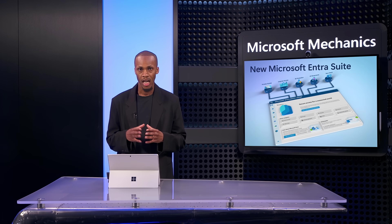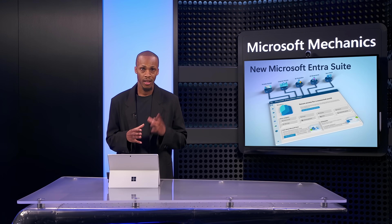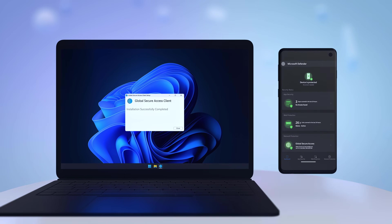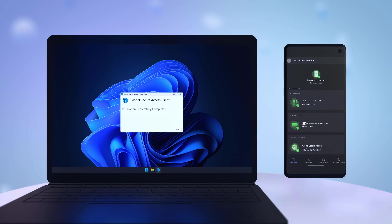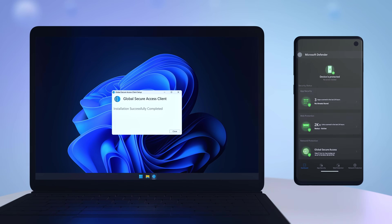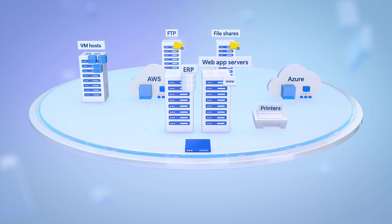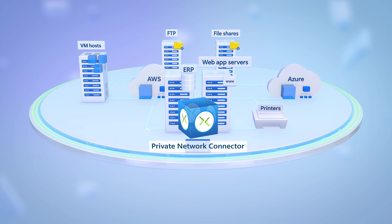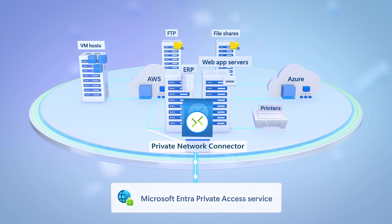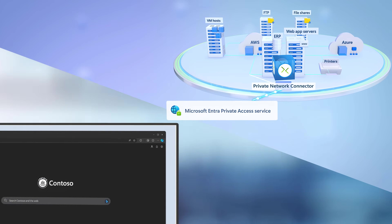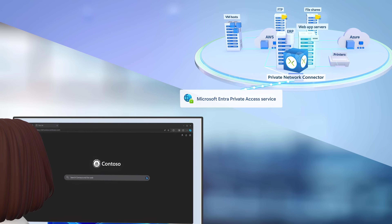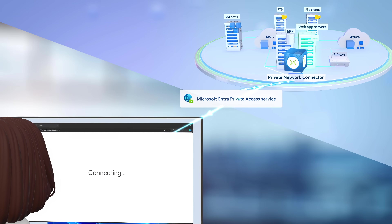Private Access helps block lateral attack movement, reduces the risk of over-permissioning, and replaces legacy VPNs. It works by using a locally installed Global Secure Access agent on your user's managed device. Then, in your local network, you install a private network connector as an agent to handle traffic, which only uses outbound connections. These work together to securely establish the connection between the user and the private resource.